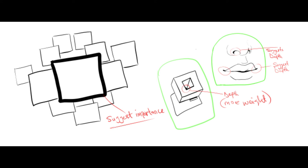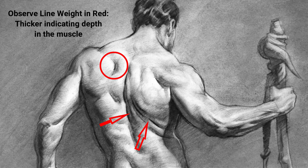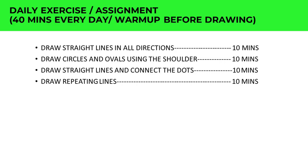Line weight also affects perspective: objects closer to the viewer use a thicker line, while objects far away in the background use a lighter line. The most common uses of line weight are: to emphasize depth, show perspective with foreground versus background, and emphasize importance. This even works when drawing figures — at muscular areas and points where body parts go inward, like the clavicle or collarbone, you make that area a little darker to emphasize depth.